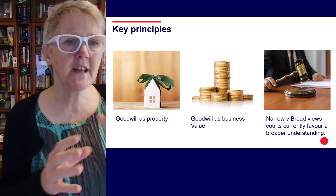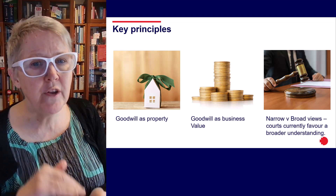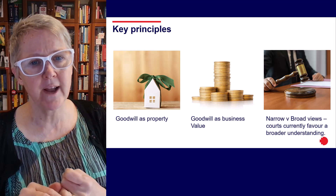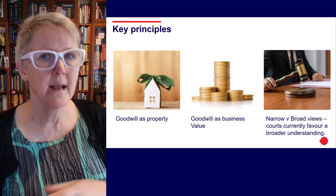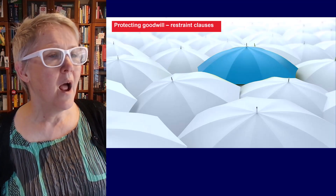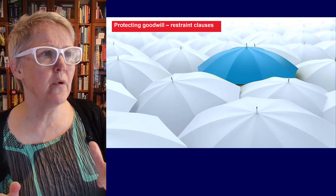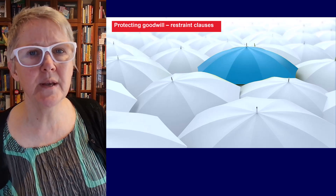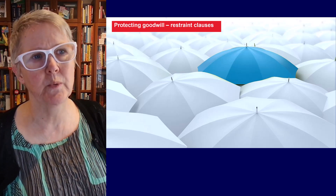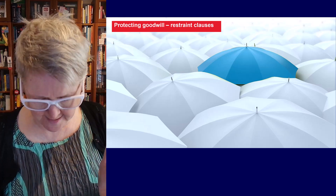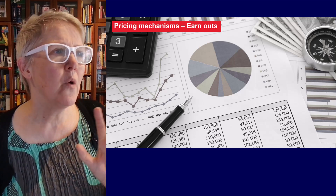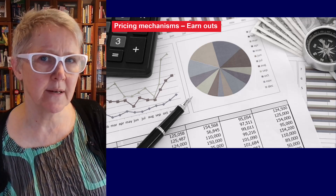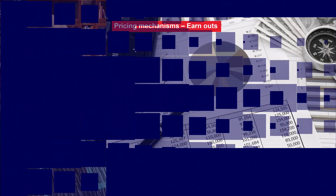Courts have taken both narrow and broad views of goodwill, and these days are moving from the narrow view of goodwill as primarily customer loyalty to a broader understanding that includes factors like brand name, location, operational methods, and trade secrets. In a later video I'll discuss restraint clauses, because the purpose of a restraint clause is essentially to protect goodwill — that's an important issue to keep in mind. I'll also do a separate video specifically on another pricing mechanism I highlighted earlier: the earn-out. That will be important and may be relevant to your assignment.